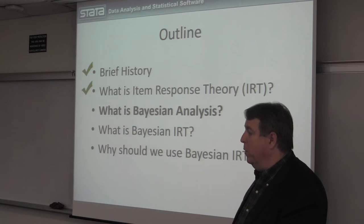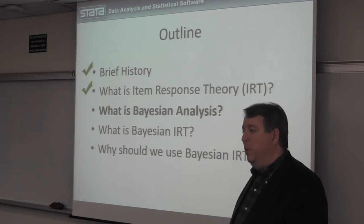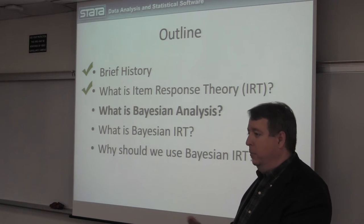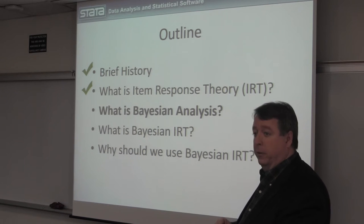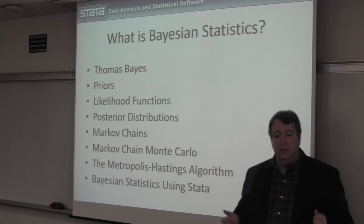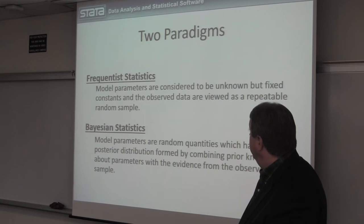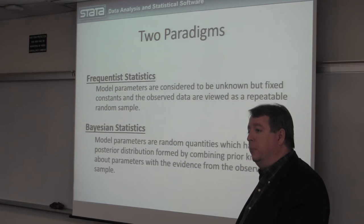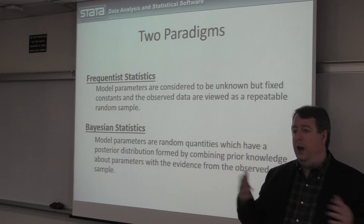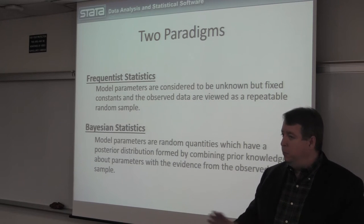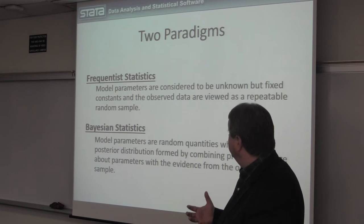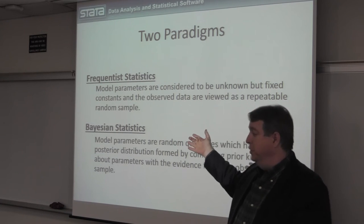So that was IRT — a big topic condensed into about 30 seconds, but there's much more to it. You can handle ordinal items and other things, but for our purposes we're going to stick to binary outcomes. Now, Bayesian analysis — what the heck is this stuff? There's an awful lot of jargon and concepts, so we're going to try to break this down into little pieces and make it digestible. The main thing I want to emphasize is that Bayesian techniques and MCMC are not simply different estimation techniques. It's not like we have OLS, or maximum likelihood, or Bayes. It's much more than that.